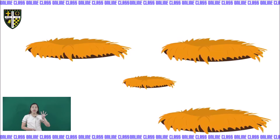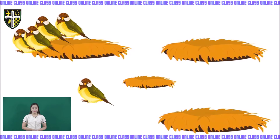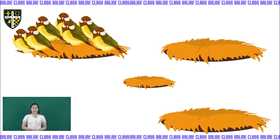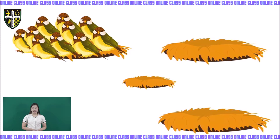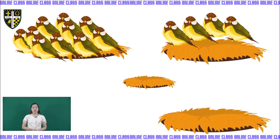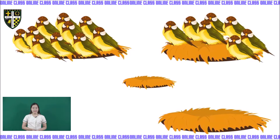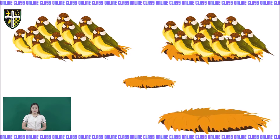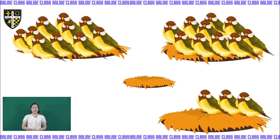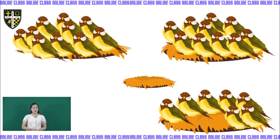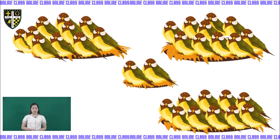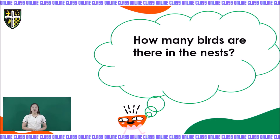Look at the nests. We have four nests. Now, let's count all the birds: 1, 2, 3, 4, 5, 6, 7, 8, 9, 10, 11, 12, 13, 14, 15, 16, 17, 18, 19, 20, 21, 22, 23, 24, 25, 26, 27, 28, 29, 30, 31, and 32. How many birds are there in the nest? We counted the birds and the total is 32.